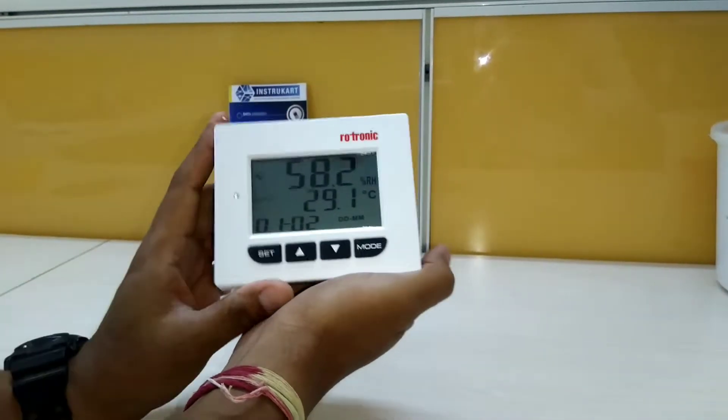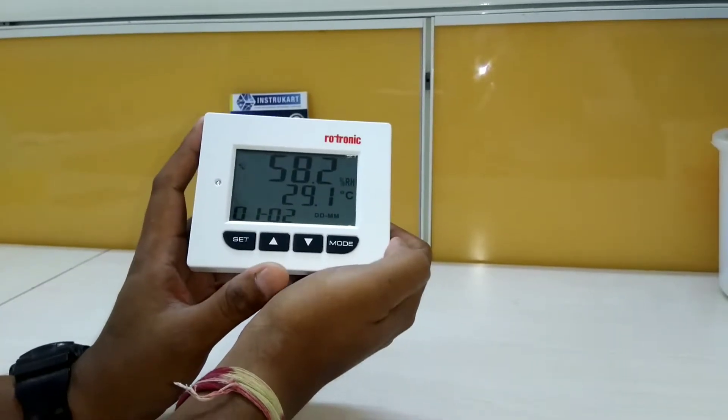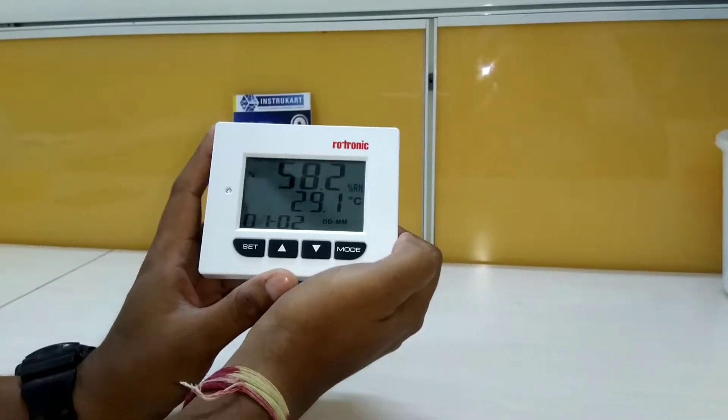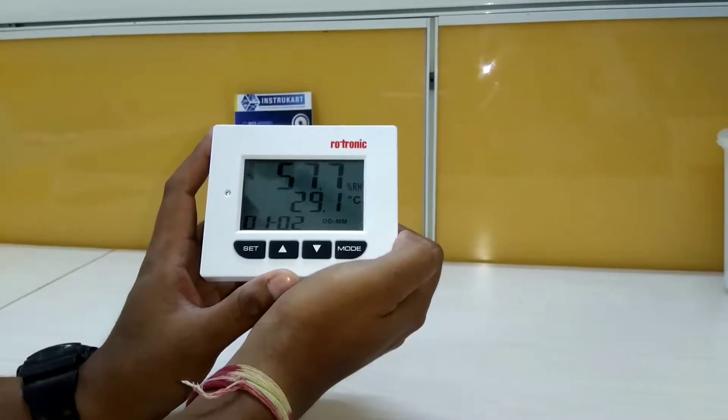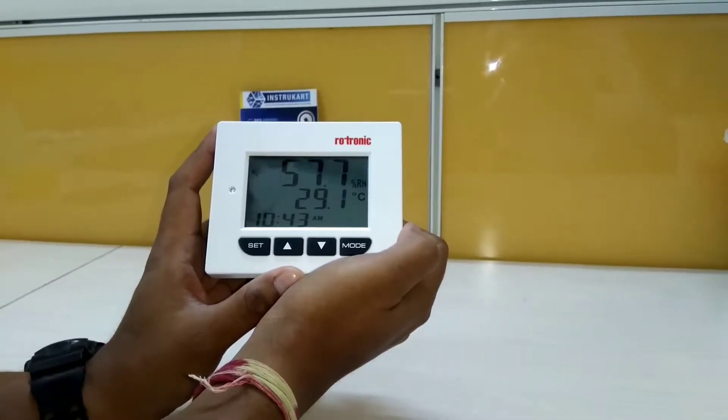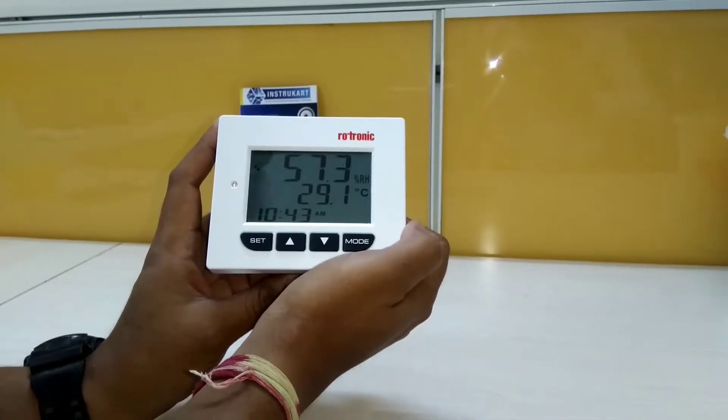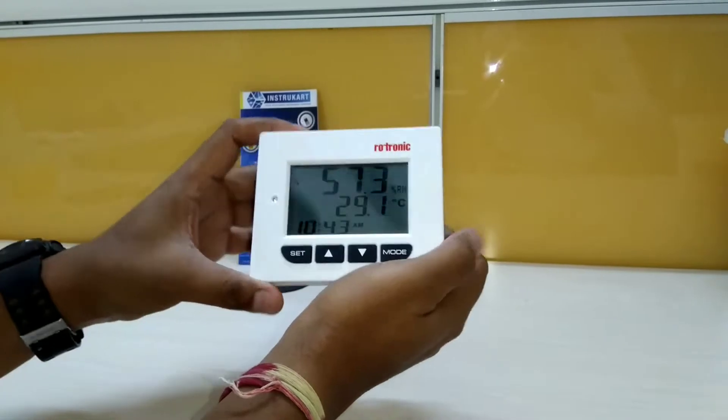This is a basic hygrometer with RH, temperature, and date function. This hygrometer is widely used in greenhouses, cold storage, and wherever temperature and humidity has to be monitored for desktop use.